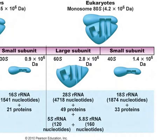Eukaryotic ribosomes are not all that dissimilar. There is a large monosome comprised of fused large and small subunits. The large subunit contains several proteins and three rRNAs, and the small subunit contains a single rRNA and a number of proteins. You've probably seen ribosomes as bumps on the rough endoplasmic reticulum, but understanding their structure is essential to understanding their function.